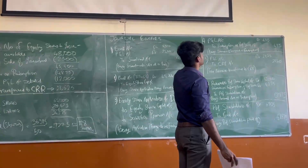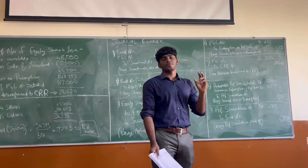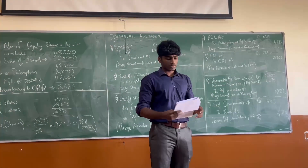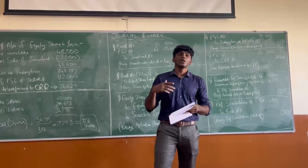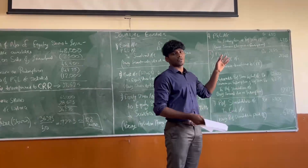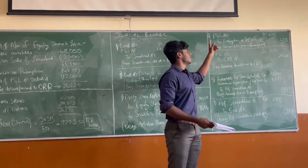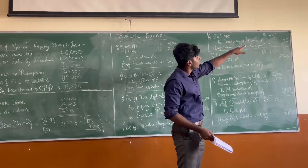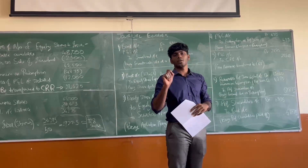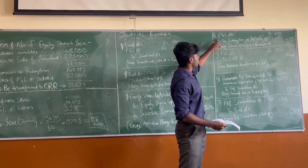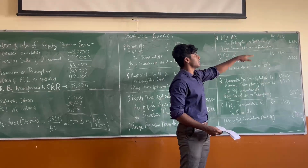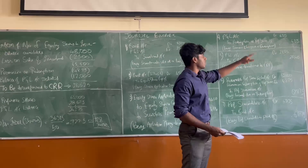Journal entry 4 concerns paying off the loss from redemption of preference shares at a premium. Since the preference shares are redeemed at a premium, that is a loss. That loss of 4,875 — which is 7.5% on the total preference shares — has to be charged to the P&L account. So the entry is: P&L account debited to Premium on Redemption of Preference Shares account — the premium amount charged on redemption.